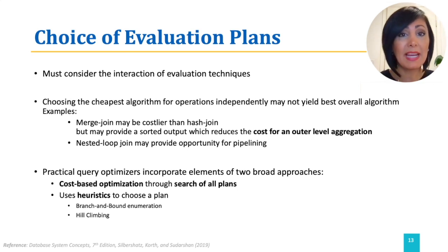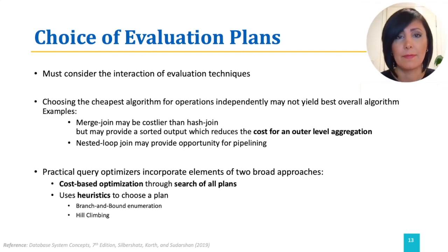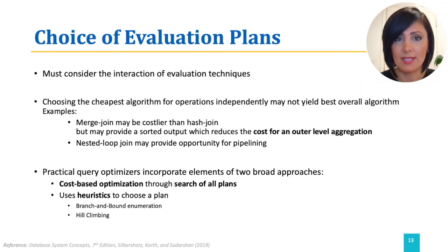The hill-climbing algorithm also may start the search with a heuristically selected physical plan. The algorithm then makes small changes to the plan, for example, replacing one method for executing an operator for another, or redoing joins by using associative or commutative laws to find a nearby plan that has a lower cost. The search is over when no small modification yields a plan of a lower cost.